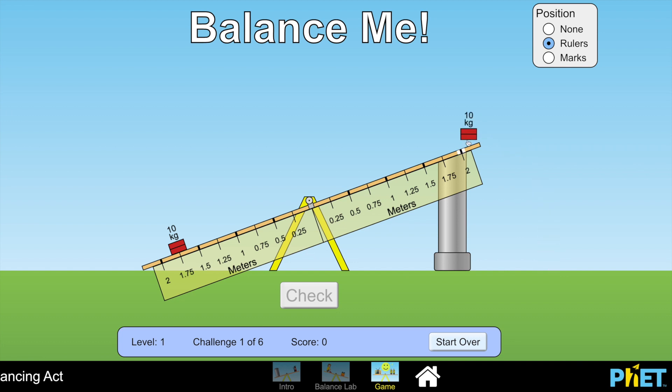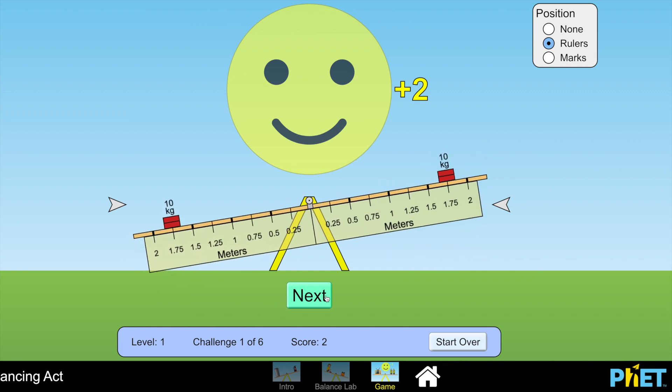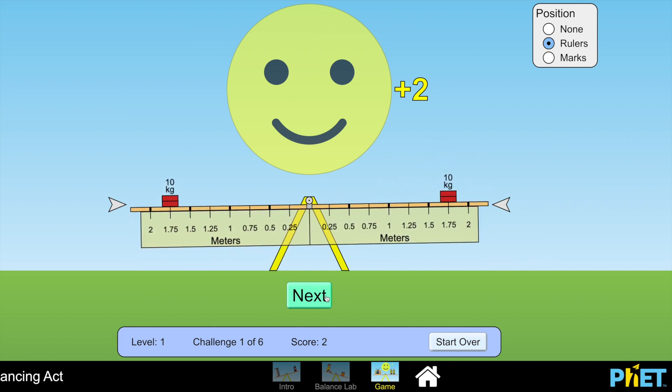The answer is to actually place it at the exact same distance. And we can check what happens now. Because these two masses produce the same force and are at the same distance from the pivot, they produce the same turning force.